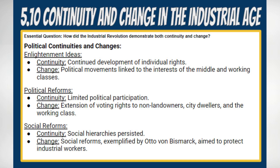Political Continuities and Changes. 1. Enlightenment Ideas. Continuity: philosophers continued to develop political ideas emphasizing individual rights. Change: political movements during the Industrial Revolution were closely linked to the interests of the growing middle and working classes, demanding the right to vote and an end to aristocratic privileges.